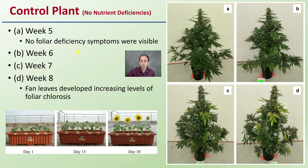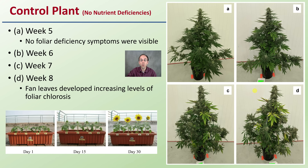First, let's look at the control plant where there are no nutrient deficiencies. Here is week five, week six, week seven, and week eight. In week eight, fan leaves developed increasing levels of foliar chlorosis — that's considered normal for the control. We're really looking at the inflorescence or the flowers; the fan leaves we want to see looking good. There will be some variability plant to plant, so I'll try to show you the major textbook images for comparison.